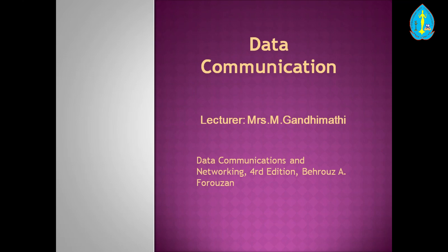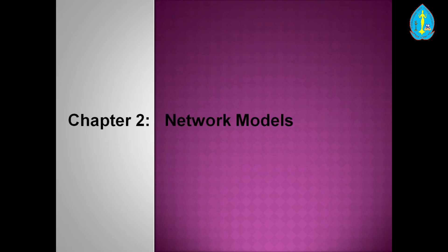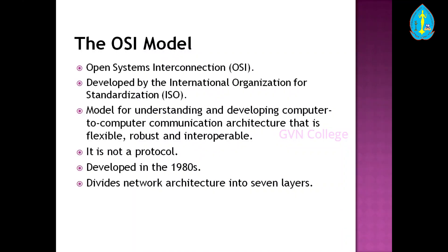Now we discuss data communication in the second chapter — how to communicate data for future use in the network. Here we discuss about network models. In the previous session we discussed the basics of networks. The model we use is the OSI model. OSI means Open System Interconnection, developed by the International Organization for Standardization (ISO). It was developed in the 1980s and divides the network architecture into seven layers.